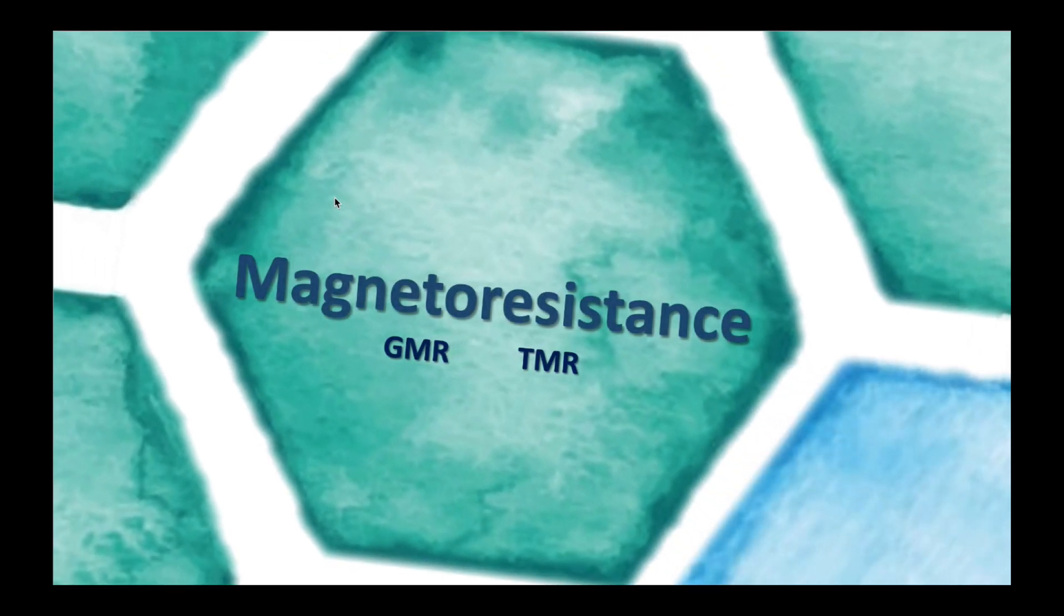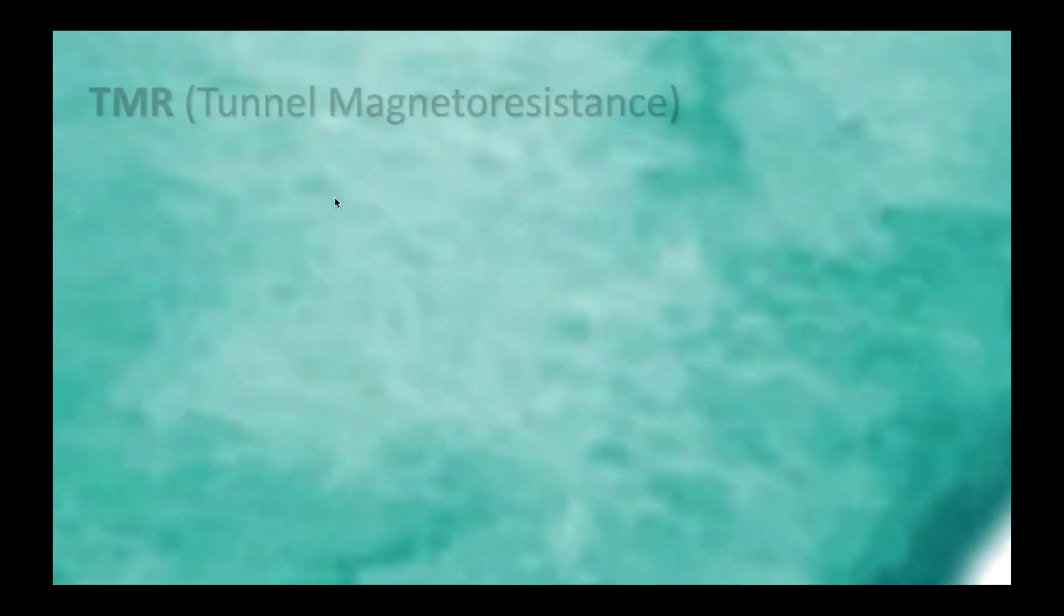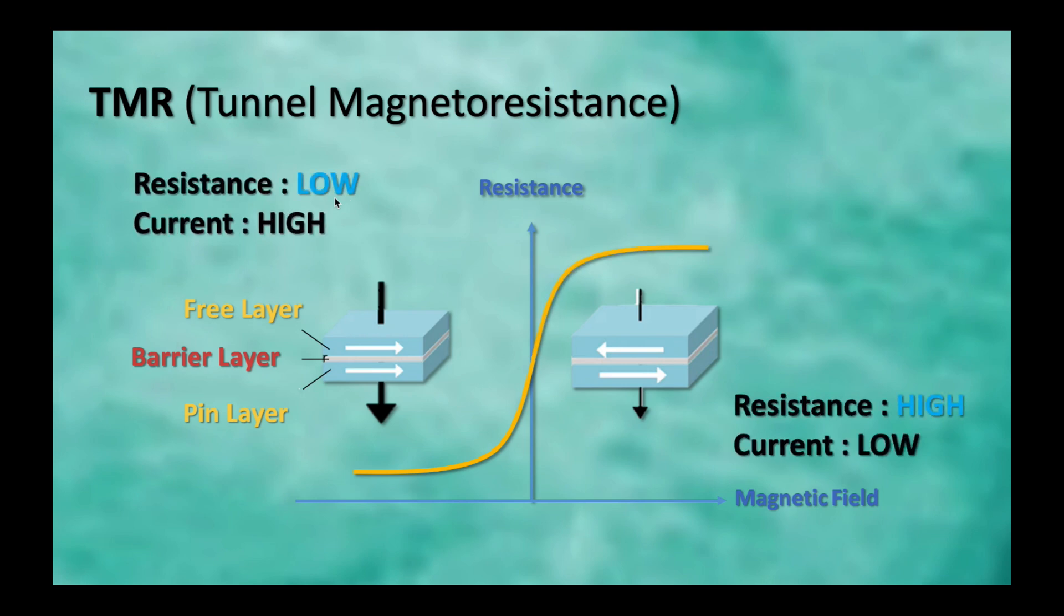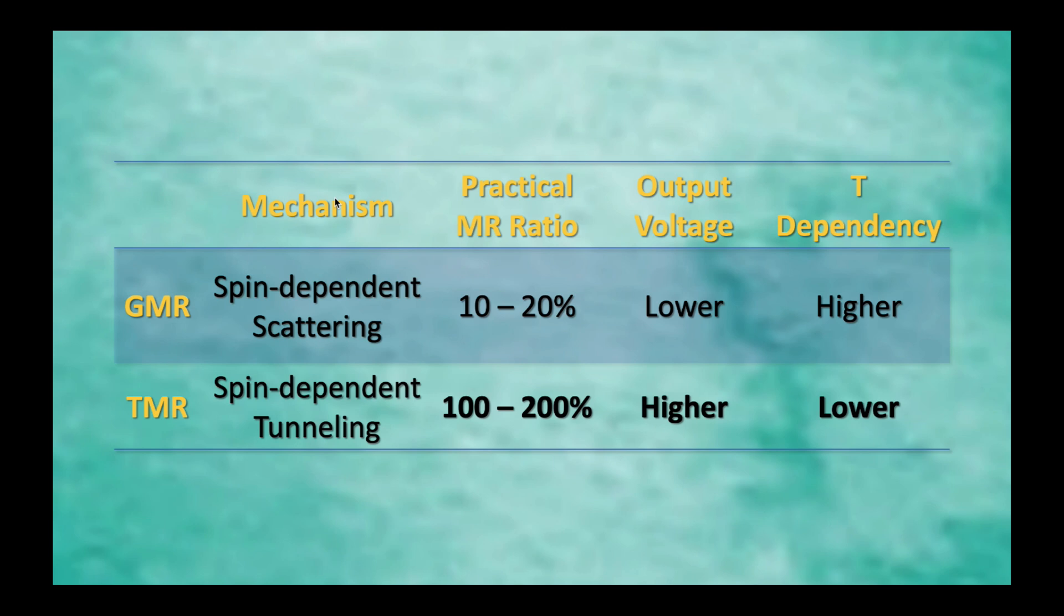Besides, we finish the GMR. And the other resistance is Tunnel Magnetoresistance. Just like TMR, it makes use of the tunnel current we learn in quantum physics. When the magnetization is parallel to each other, the electron will tunnel through the barrier layer. But when the magnetization is anti-parallel, the electron will not tunnel through. So the resistance we get will be much higher. Here we have some comparison for GMR and TMR. And overall, TMR shows a better performance than GMR.